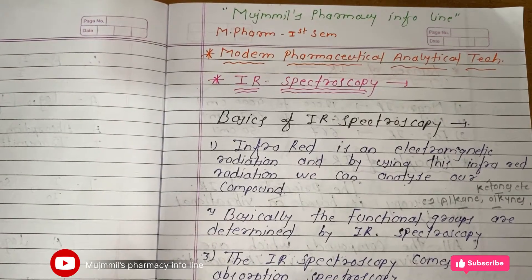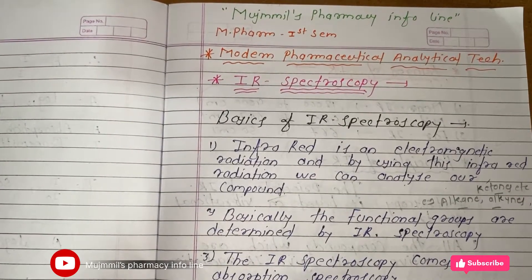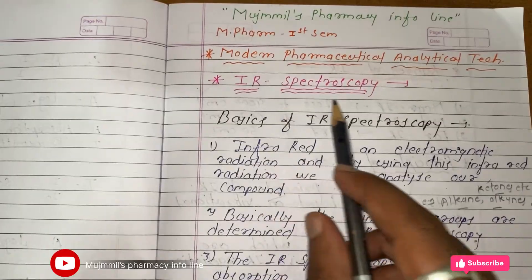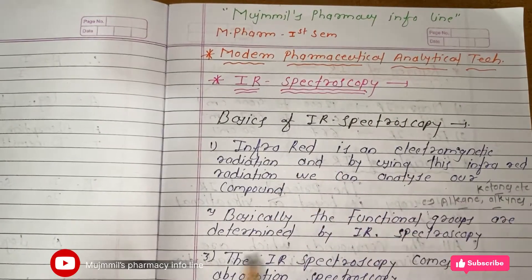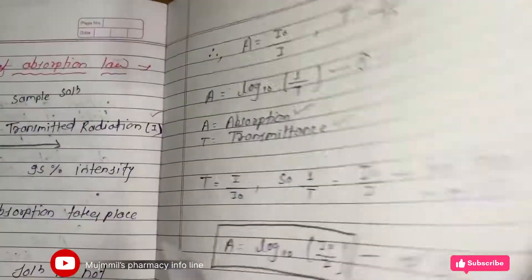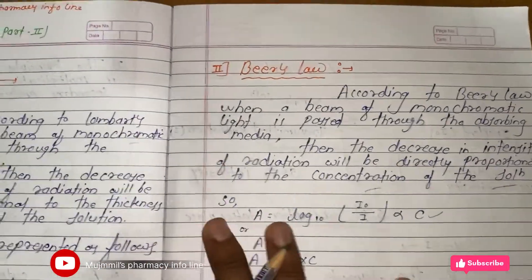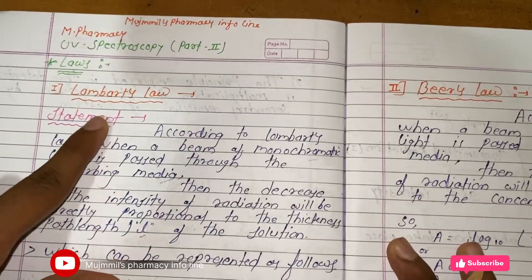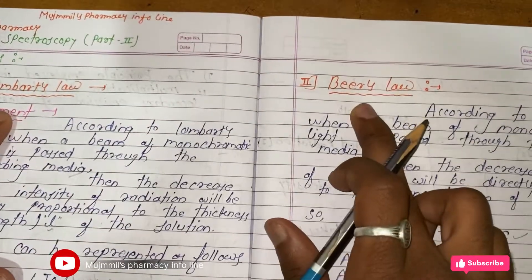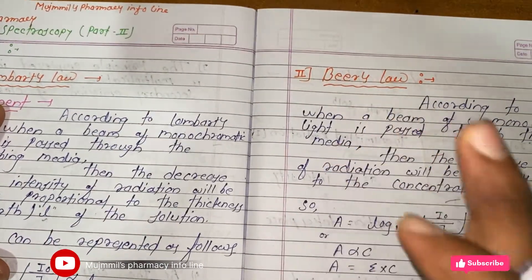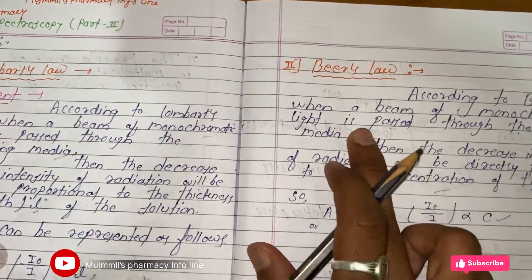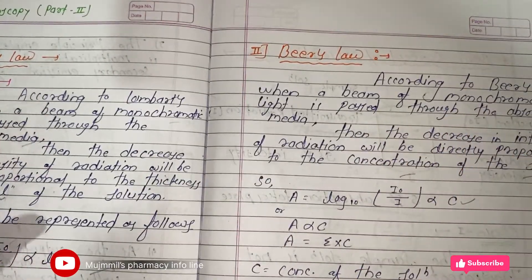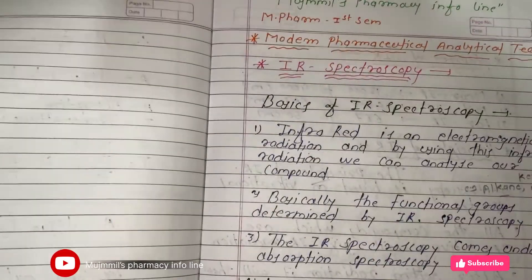Hello friends, welcome to our YouTube channel. Today we are going to see about IR spectroscopy. In the last lecture we covered the laws of UV-visible spectroscopy — Lambert's law and Beer's law. If you have not seen that video, please visit it; I will provide the lecture link in the description.